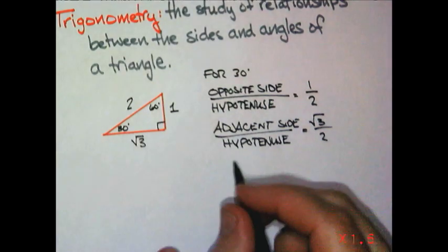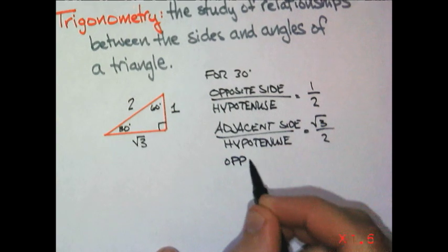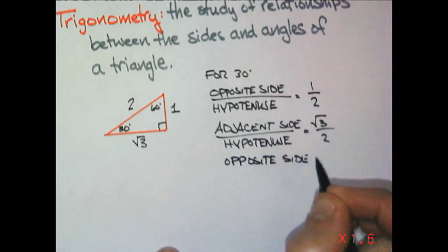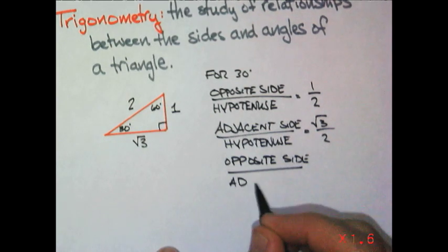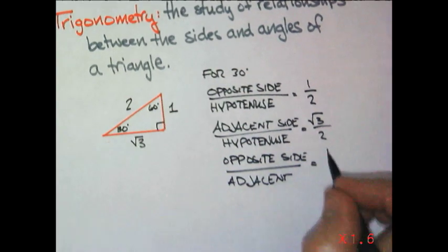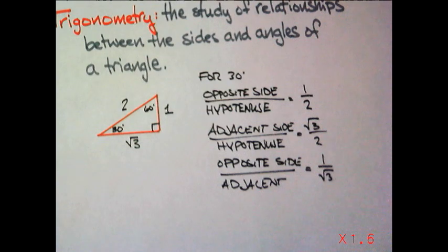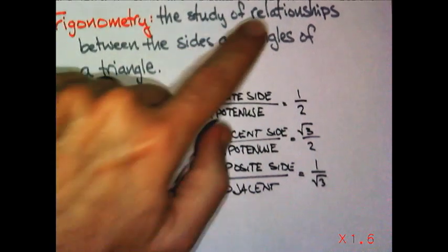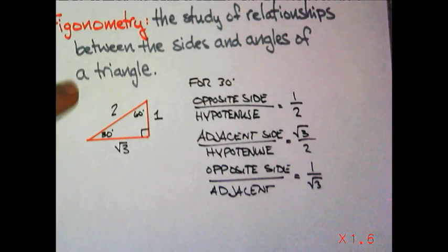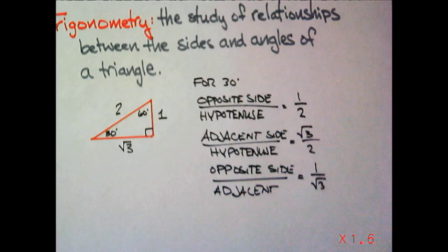Another comparison I could make would be opposite compared to adjacent. And that would be 1 to root 3. You could rewrite that as root 3 over 3. We also could make the reciprocals of all of these. All of these comparisons are trigonometry. They are studying a relationship between the sides and the angles. So, if you have a 30-degree angle and a right triangle, they will always be this relationship.